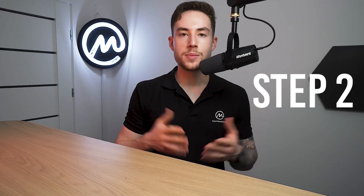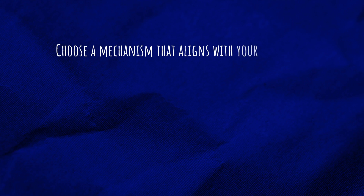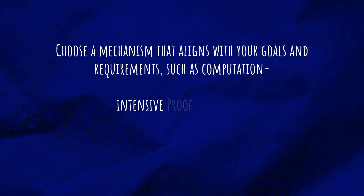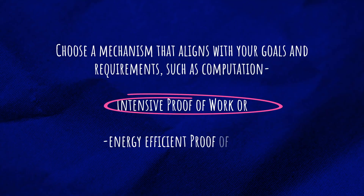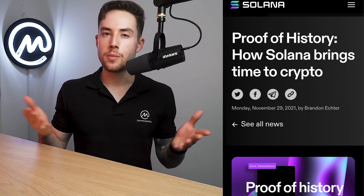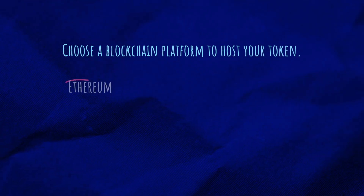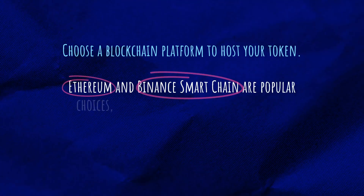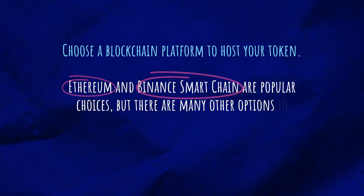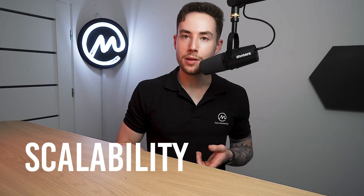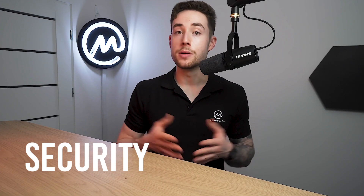Knowing what problem your token solves will help you identify a responsive target audience and create a highly targeted marketing plan post-launch. Step two: choose a consensus mechanism. Choose a mechanism that aligns with your goals and requirements, such as computation-intensive proof-of-work or energy-efficient proof-of-stake. Some mechanisms are very innovative, such as Solana's proof-of-history (POH), but they can also come with other problems. Step three: select a blockchain platform. Choose a blockchain platform to host your token — Ethereum and Binance Smart Chain are popular choices — and consider factors such as cost, scalability, and security when making your decision.